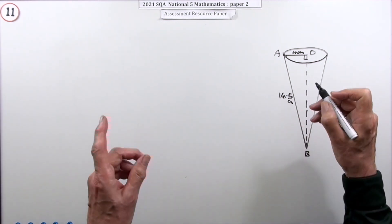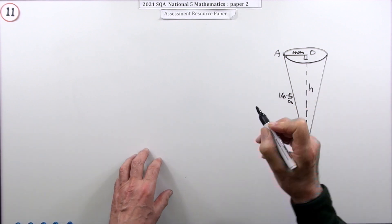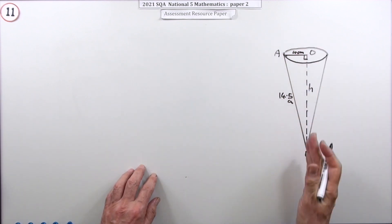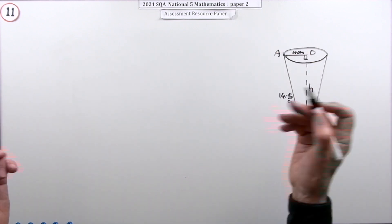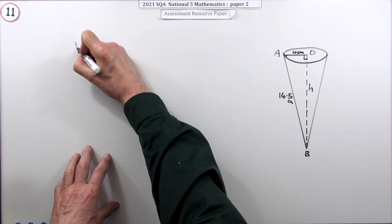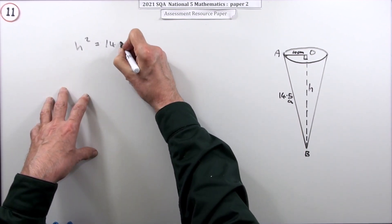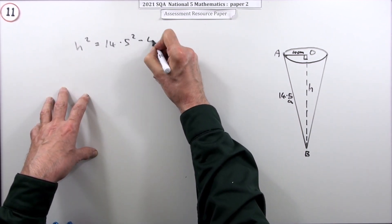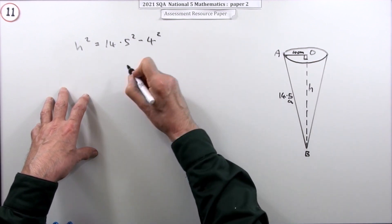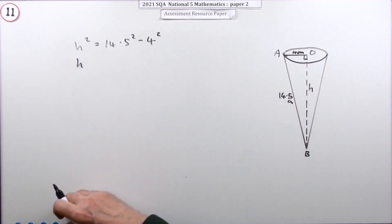Well, the first part would be what's the actual height, because that's what you want for the formula: one-third π r² h—perpendicular height, not slant height. Well, that's a right-angle triangle, that's Pythagoras. So h² would be the hypotenuse...